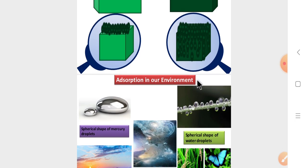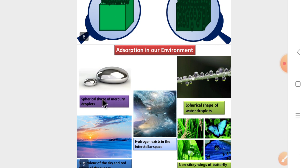Now we go to, what are the daily life examples? What are the adsorptions in the environment? First, the spherical shape of mercury droplets and drops. We can use the maximum adsorptions. We can use the surface phase of mercury droplets.